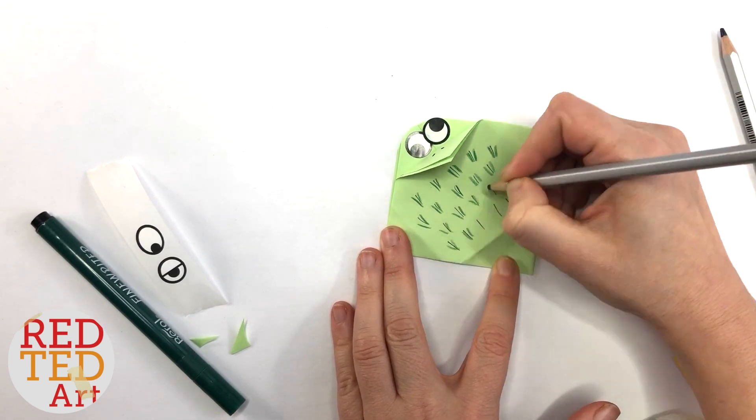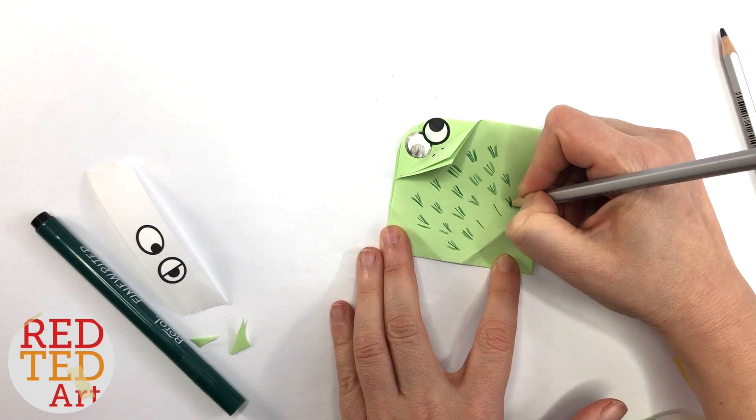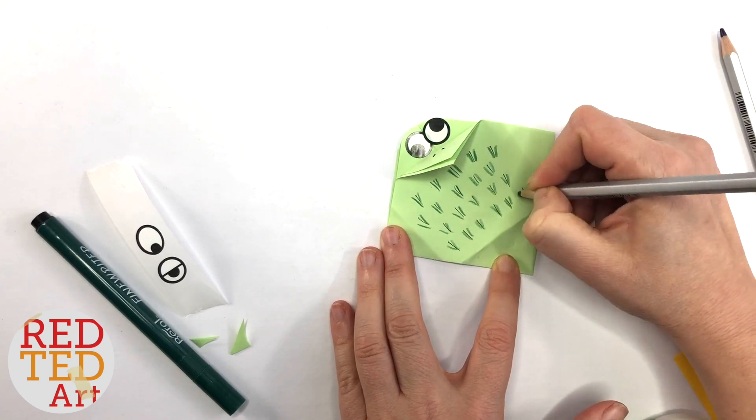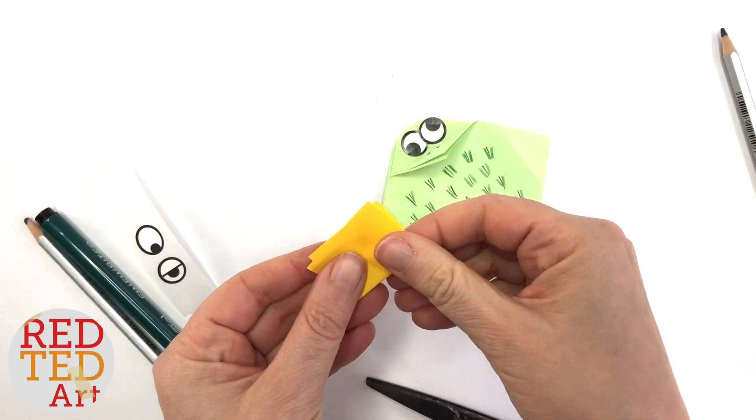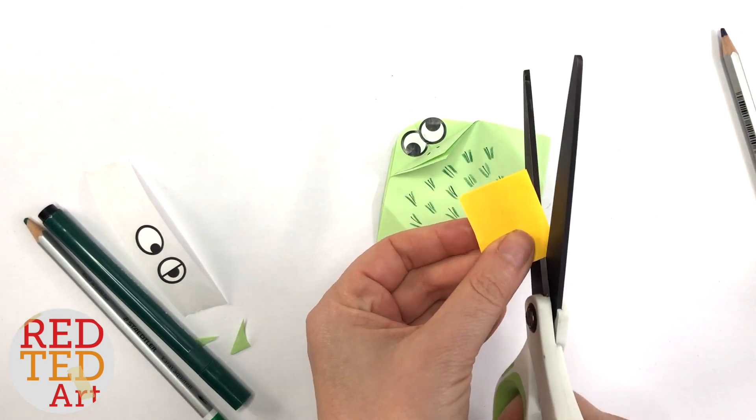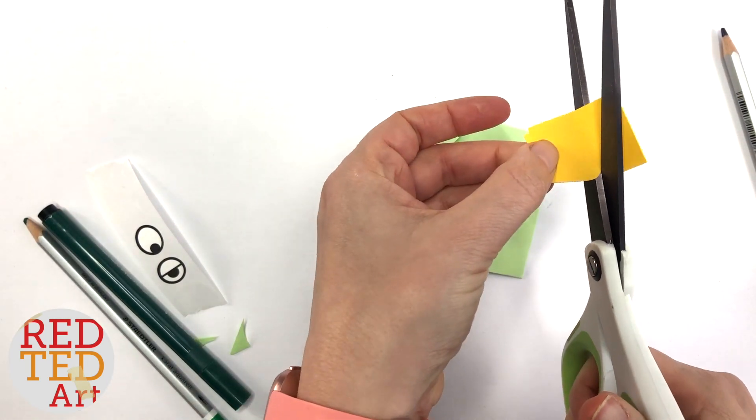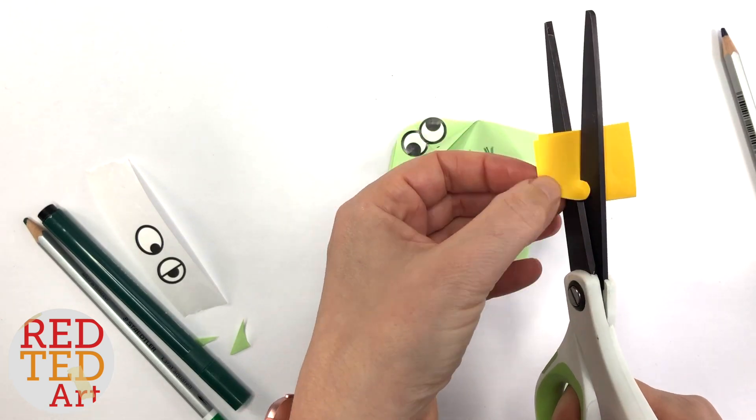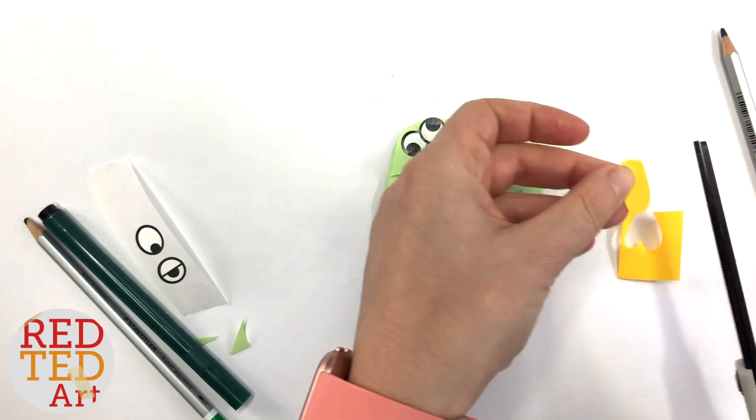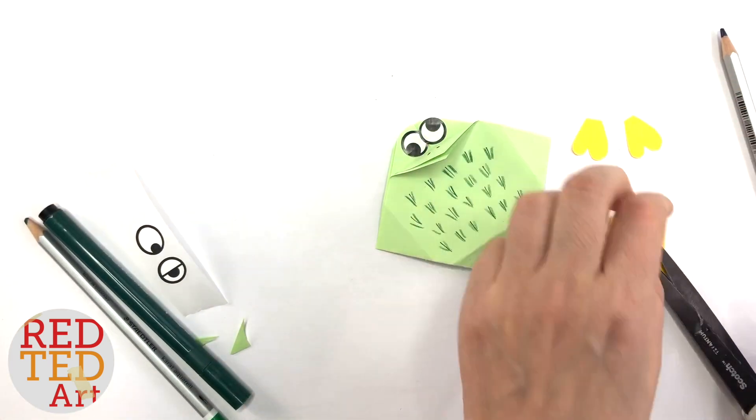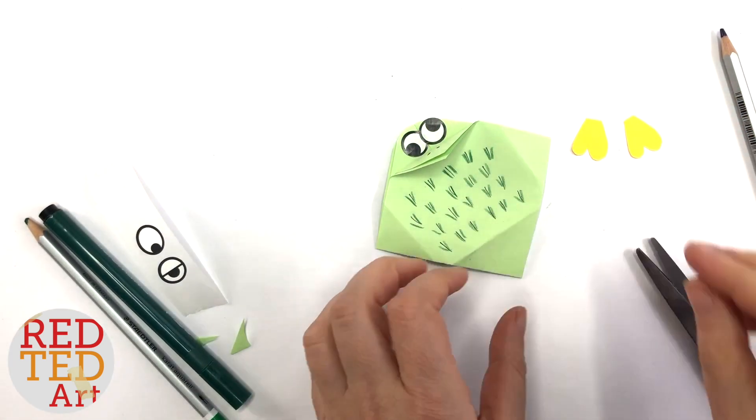I'll show you the others in detail in a minute. And then all you need is the feet. I kept it very simple. I kind of did a long heart shape. Doesn't have to be super accurate. There we go, with the ends missing. And I'm just going to glue those on.